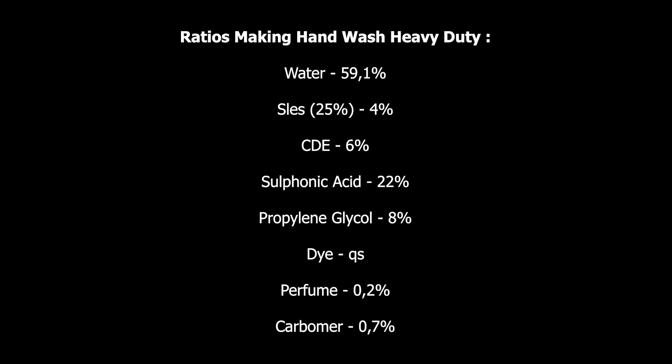Propylene glycol 8% of the total volume. Dye should be QS. You know what is QS? QS stands for quantity sufficient. You put the amount of dye according to the appearance you want to give to your product. Then perfume 0.2% of the total volume.